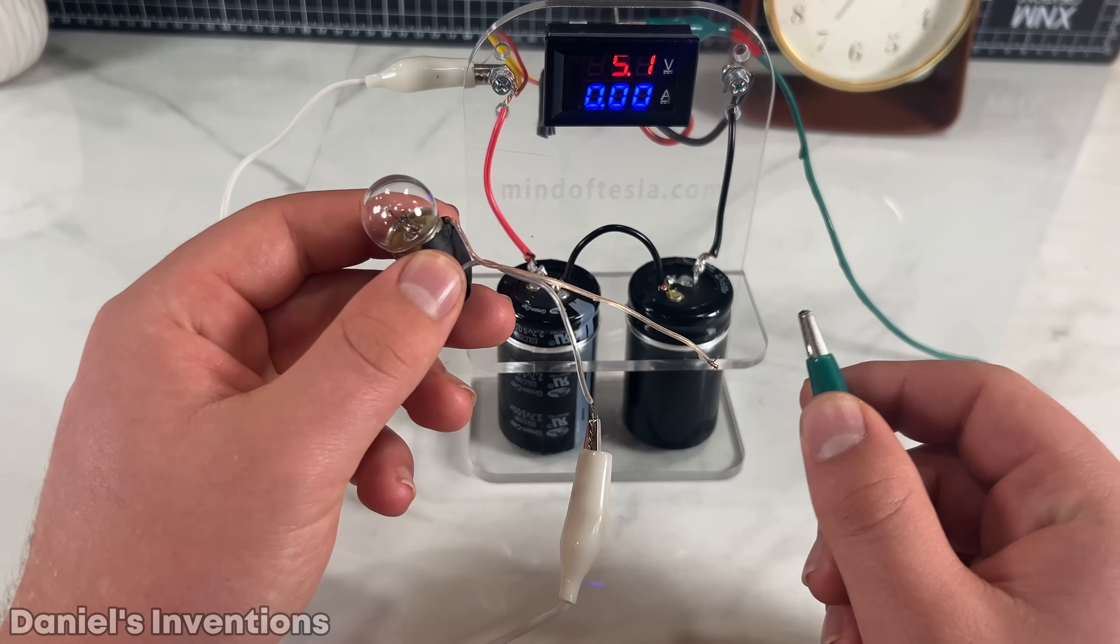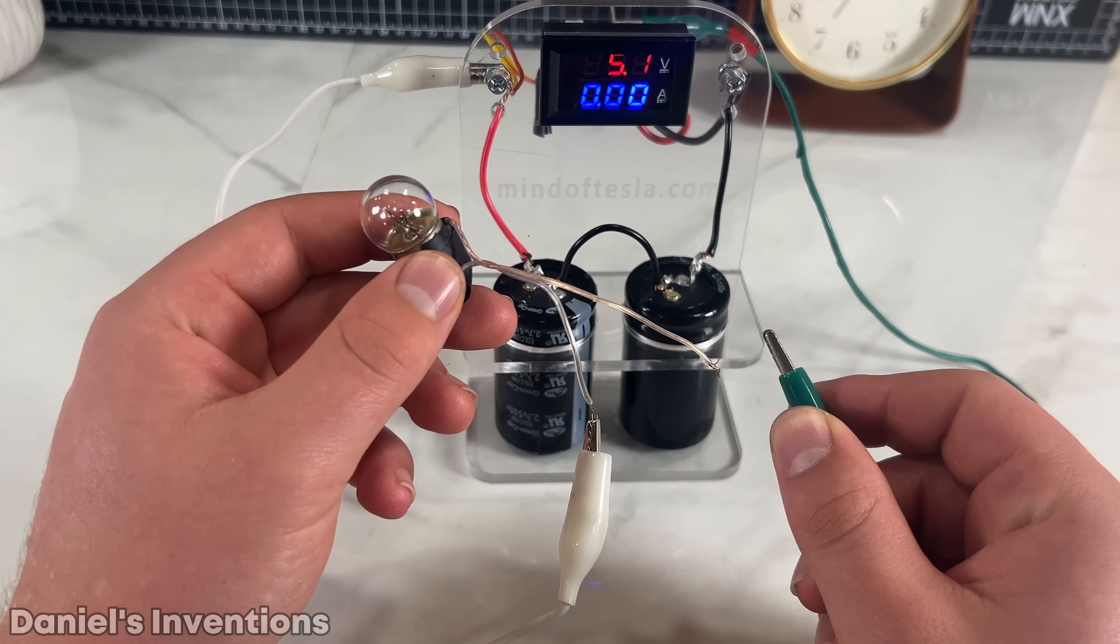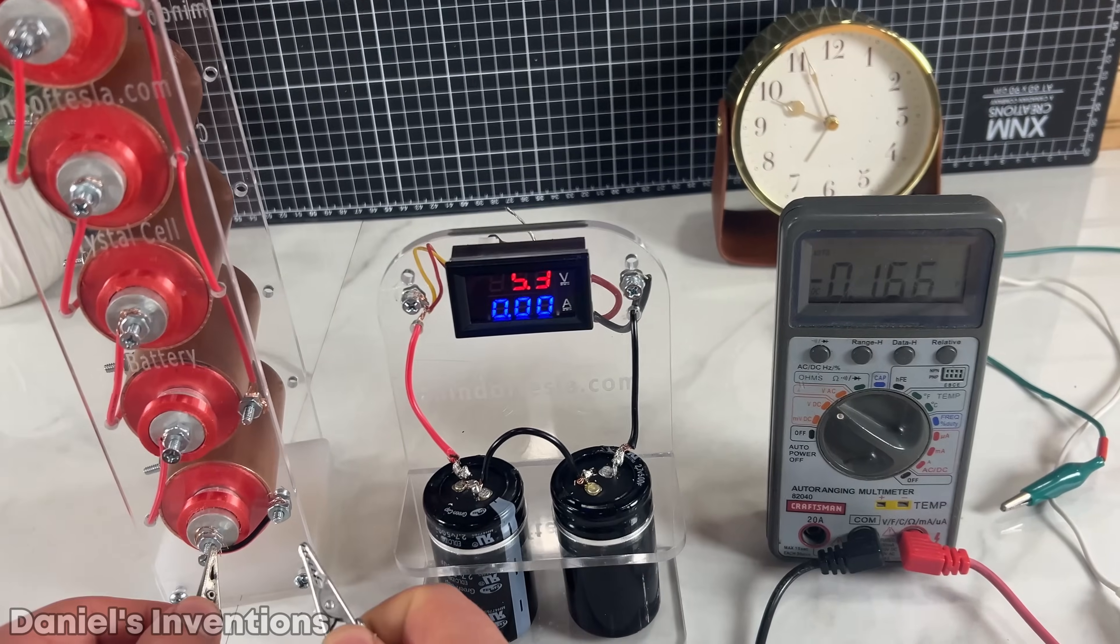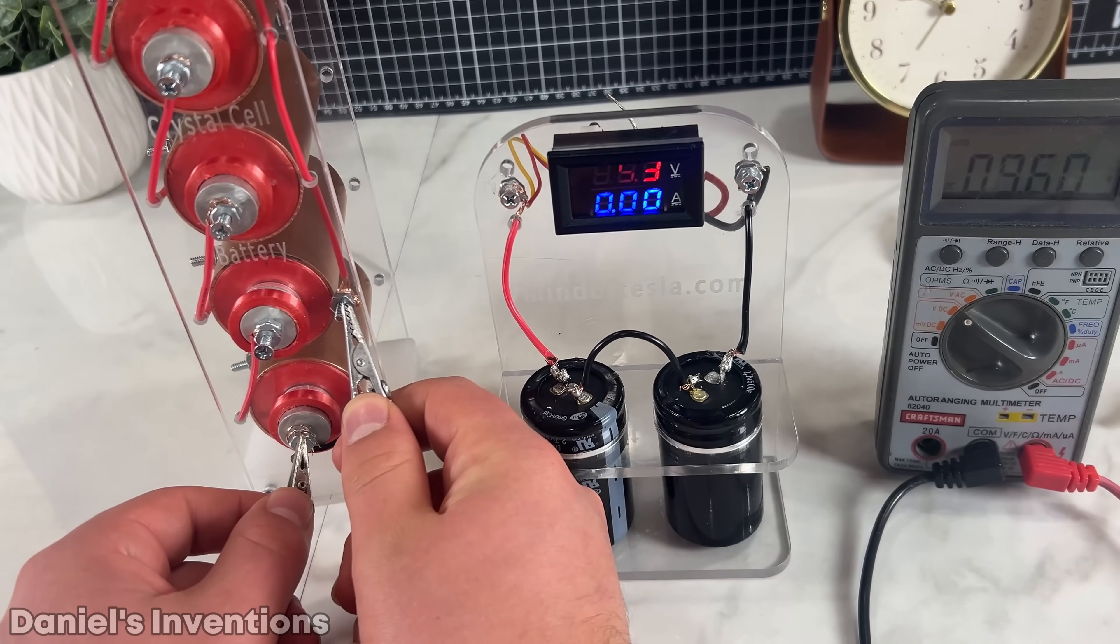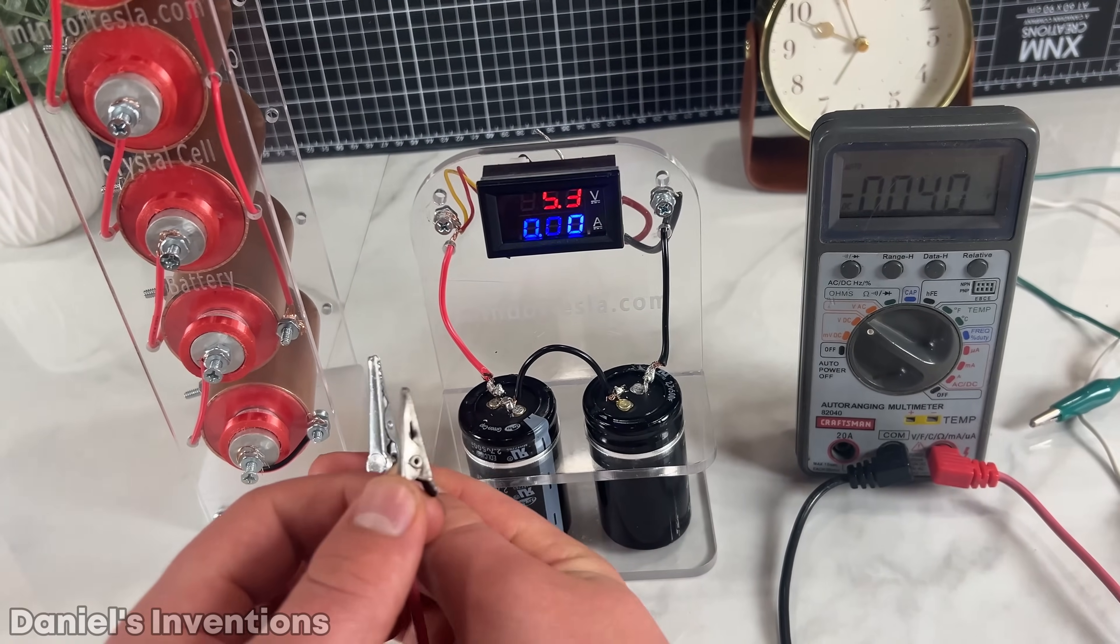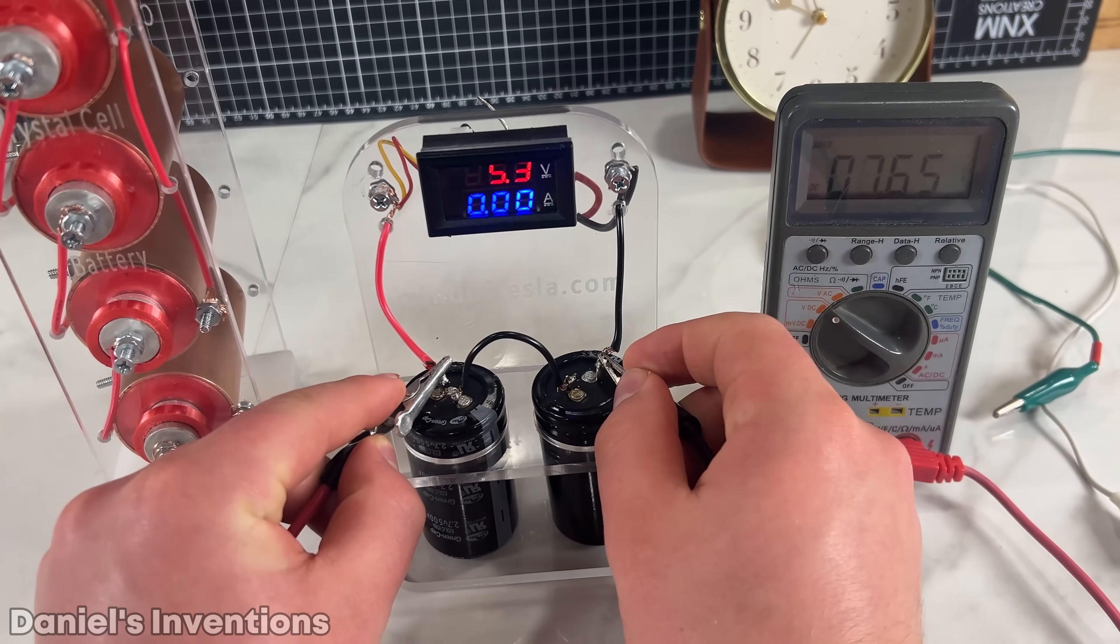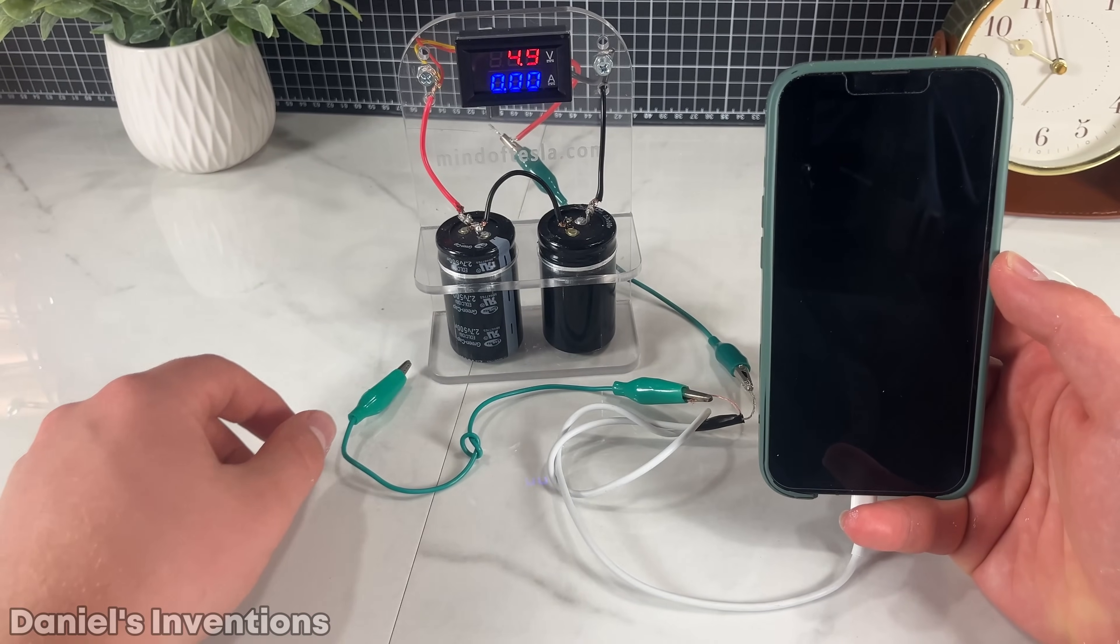A 12-volt incandescent light bulb pulls 0.28 amps at 5 volts DC. The crystal cell's potential is at 6.4 volts DC and rising after charging the supercapacitors for a while.